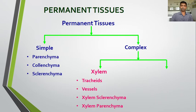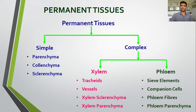Simple tissue is made up of only a single type of cell — for example parenchyma, collenchyma, and sclerenchyma. Complex tissues are made up of more than one type of cell, for example xylem. Another complex tissue is phloem, which consists of four different types of cells: sieve elements (sieve tubes, sieve cells), companion cells, phloem fibers, and phloem parenchyma.